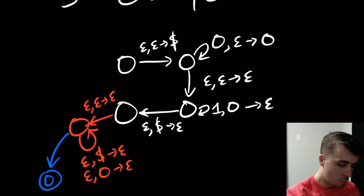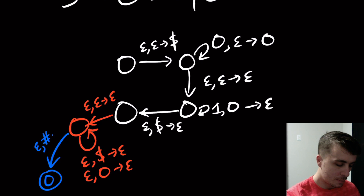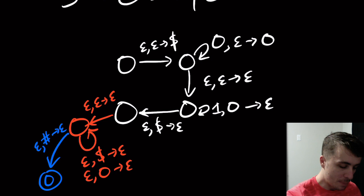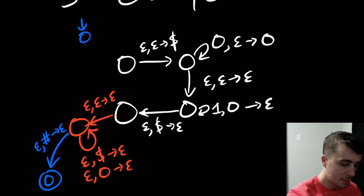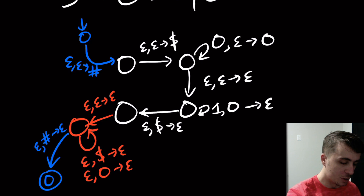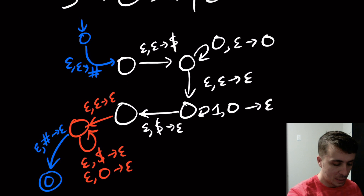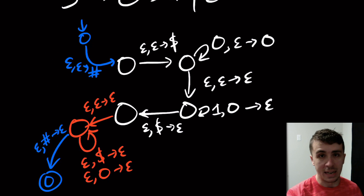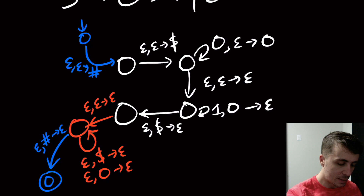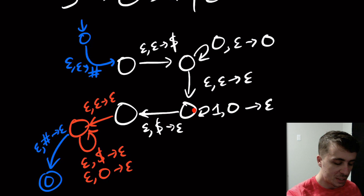Then we go to a new final state which pops off a new symbol — I'll call it pound sign, since we've already used dollar sign. The new start state goes to the old start state and pushes on that new special pound symbol. The behavior is unchanged because the transitions we add don't read anything, so the language is not affected.